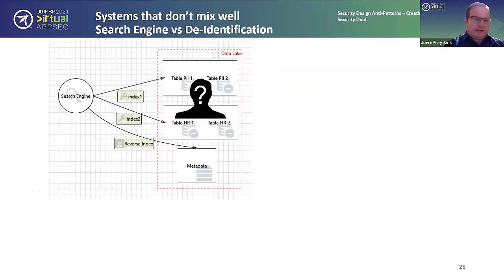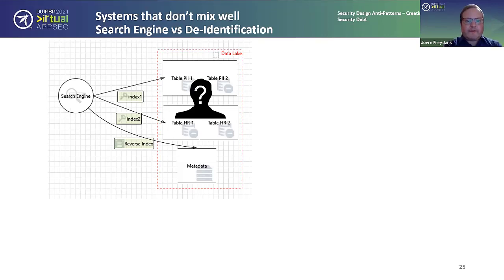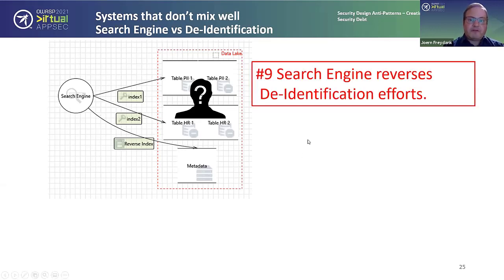Another system that doesn't mix well involves searching combined with de-identified data — and here there's a potential that systems actually reverse each other's security controls. We have a data lake with de-identified data, used for lower environments to train AI systems or for testing. You remove key identifiers and chunk up data in smaller pieces so you can work with real data formats without knowing where the data actually belongs to. Unfortunately, a search engine reverses the de-identification efforts.